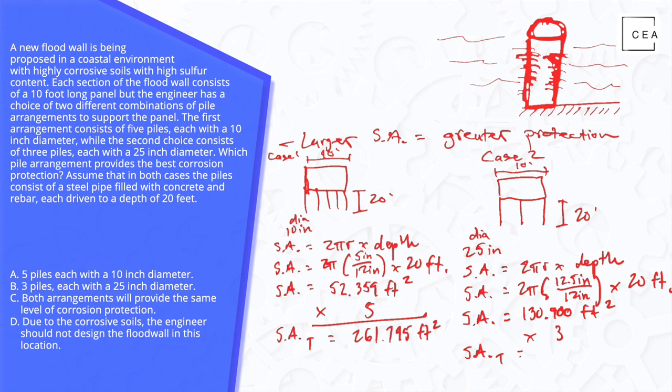So subscript T equals, we take our 130.9 times 3 and we get 392.7 feet squared.